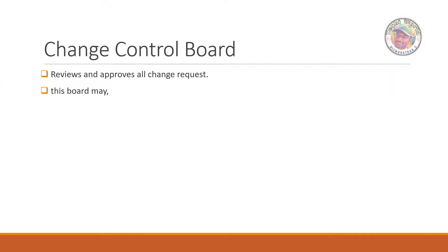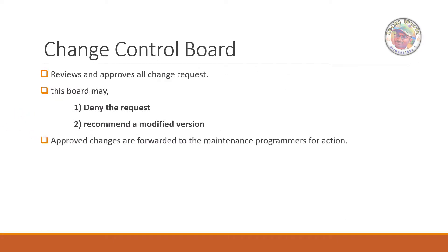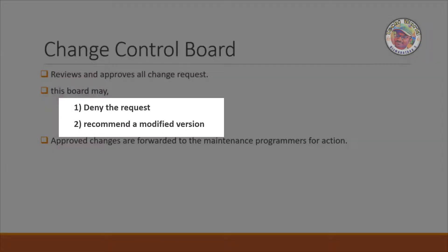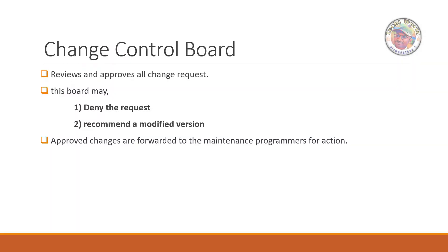What does the change control board do? The request can be done by review. If we approve, the request is approved by the change control board, or it can be rejected — the change control board can reject a request. Or the request can result in a modified version.